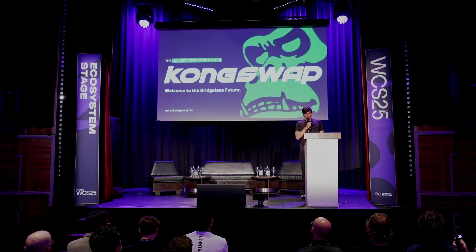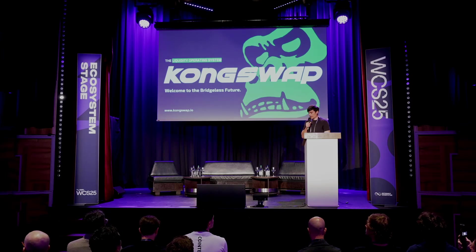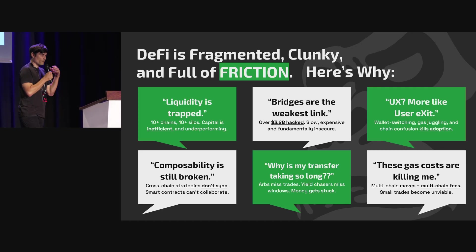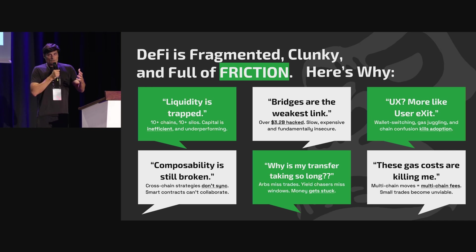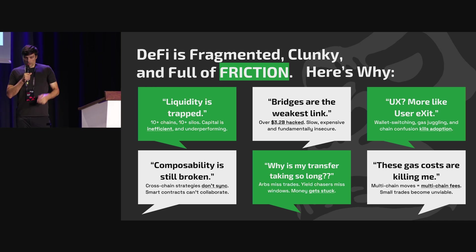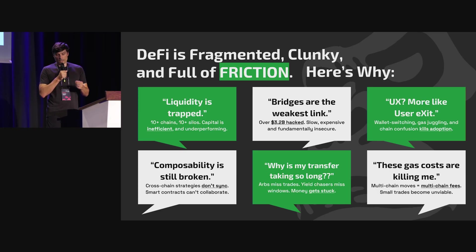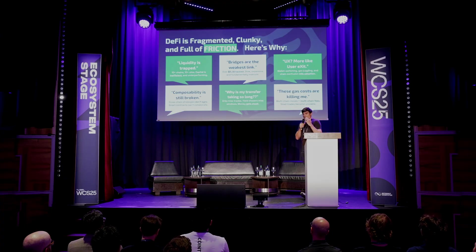Today we'll present Kong Swap, which we term a liquidity operating system. We strongly believe in a borderless blockchain economy, which we're building. One of the core problems in crypto is that liquidity is trapped — you have 10 chains, 10 different liquidity pools, capital is trapped, it's super inefficient. The second issue is bridging: bridges are crappy, they trap liquidity, they get hacked all the time, and they make DeFi super inefficient.